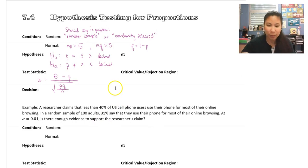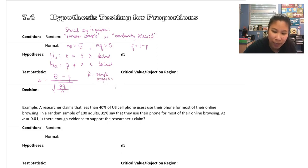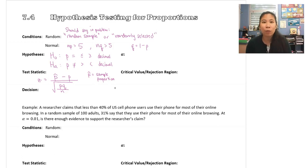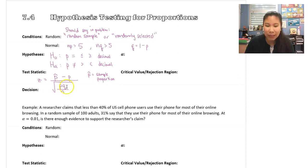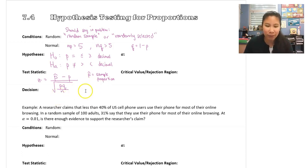P-hat is the sample proportion. In these problems, they'll give you two proportions — maybe percents, maybe fractions. One comes from the sample and one comes from the claim. The claim is your population proportion, which is the regular p that goes in your hypotheses. P-hat is the one from the sample. In the square root part on the bottom, p times q uses the regular p from your hypotheses, so q would be 1 minus that number. N is your total sample size.